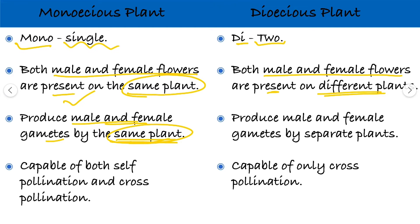But in case of dioecious plant, the flowers are present on two different plants, so gametes will be produced by separate plants. The male and female gametes will be produced by separate plants.